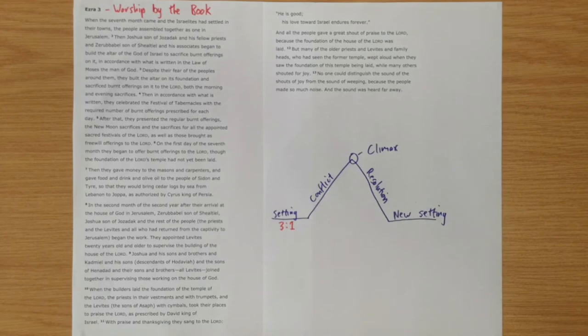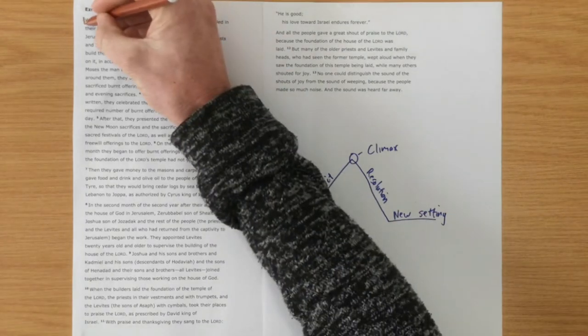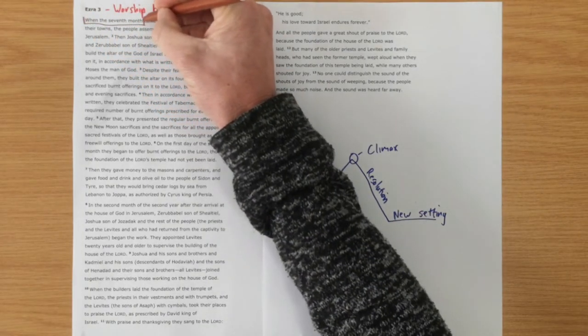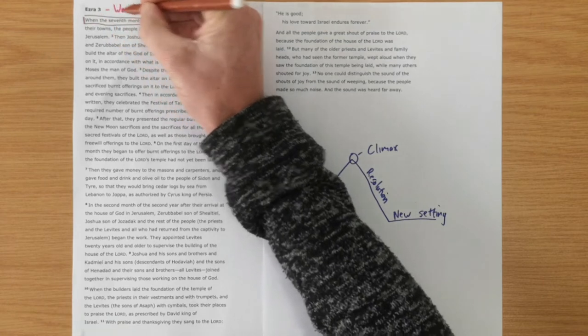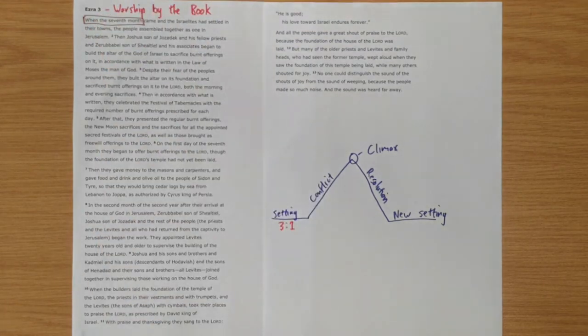In this section, our setting is given in chapter 3 verse 1. We will see that in the seventh month, we'll look a moment at the importance of that, all the people are gathering in Jerusalem. So the setting is given where in this holiest of months for God's people, they all gather together in Jerusalem as was prescribed by God's word.